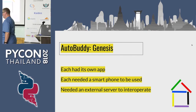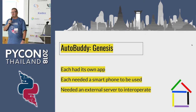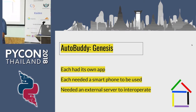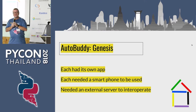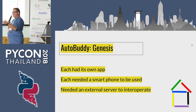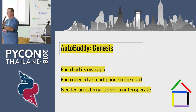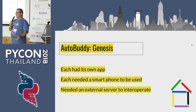Another issue is that it needed an external server to operate. You could connect those things with IFTTT or similar services. But why use a server that's across the world when my button and my lamp are right here in this room? On top of that, if you lose the internet connection — which sometimes happens — you can't turn on your lights. That's a bit of a problem.